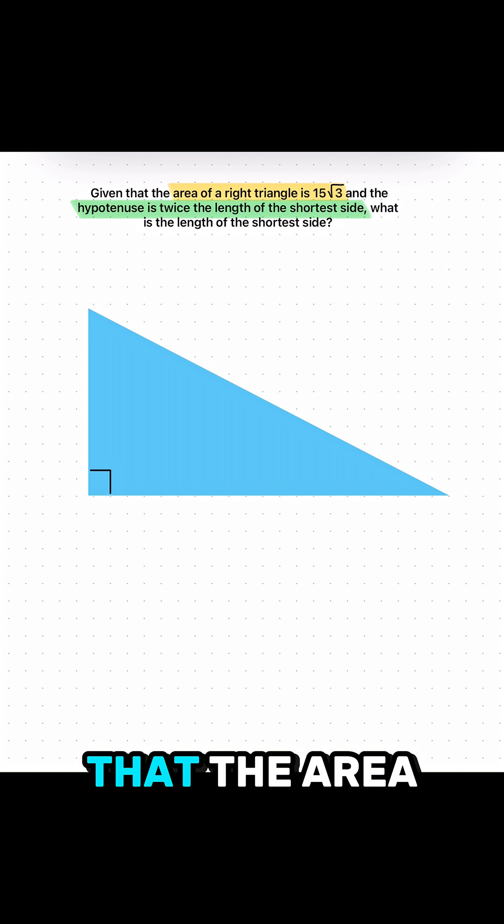So to begin, I'll record that the area is equal to 15 radical 3. In other words, half of the base times the height is equal to 15 radical 3.